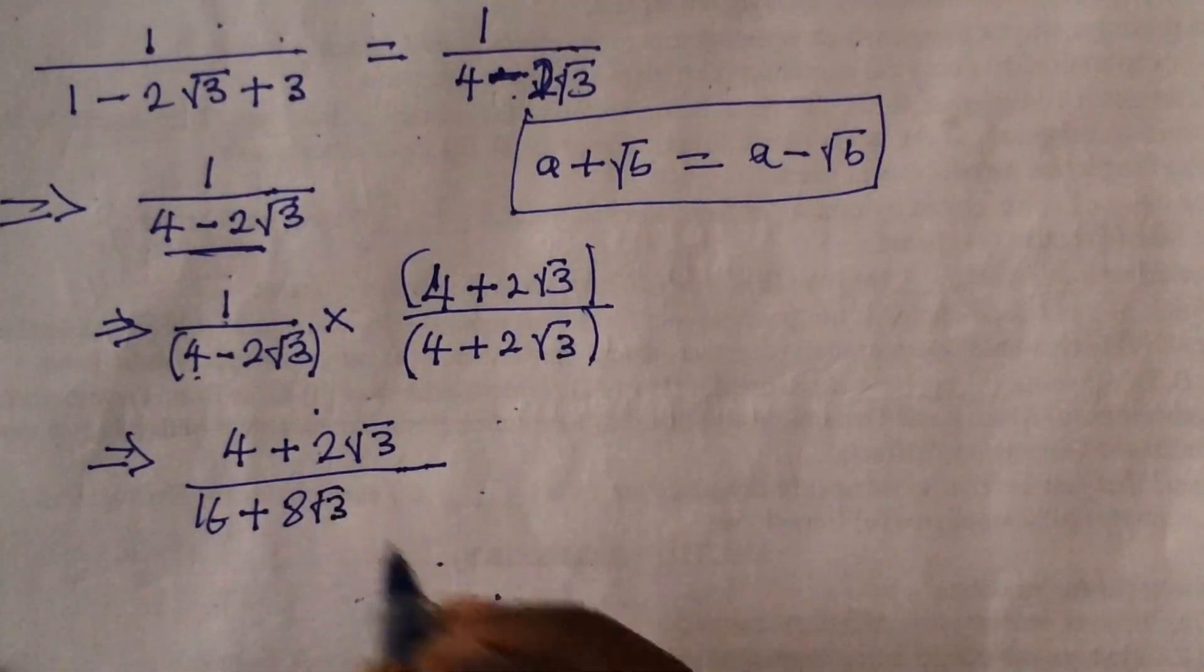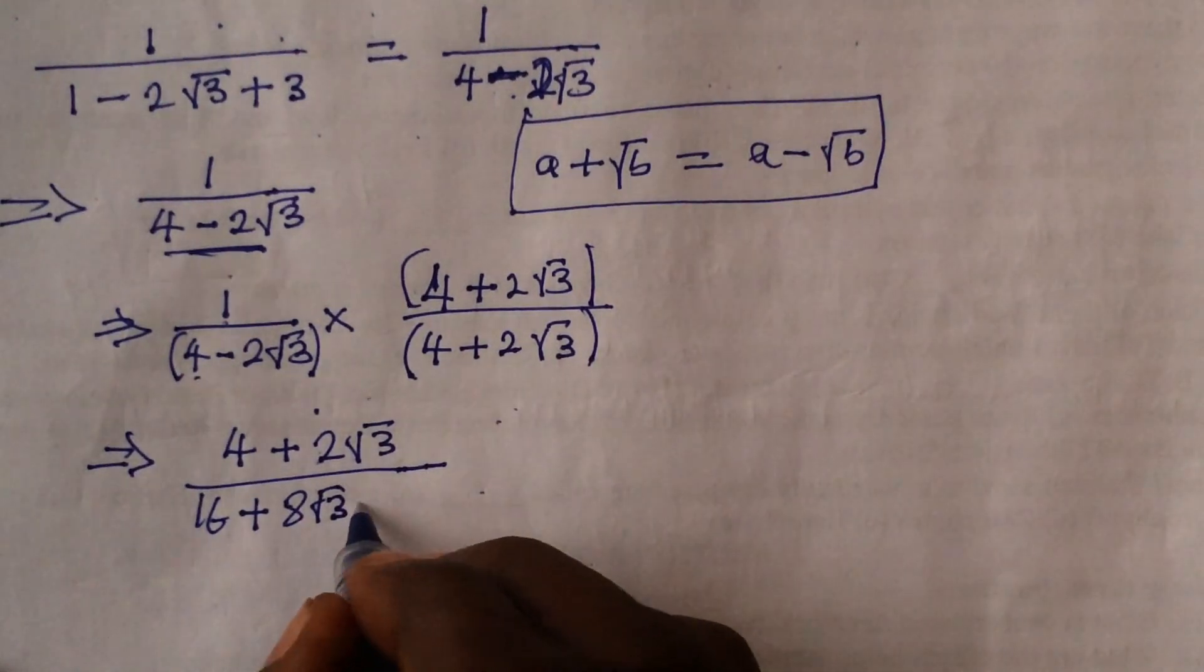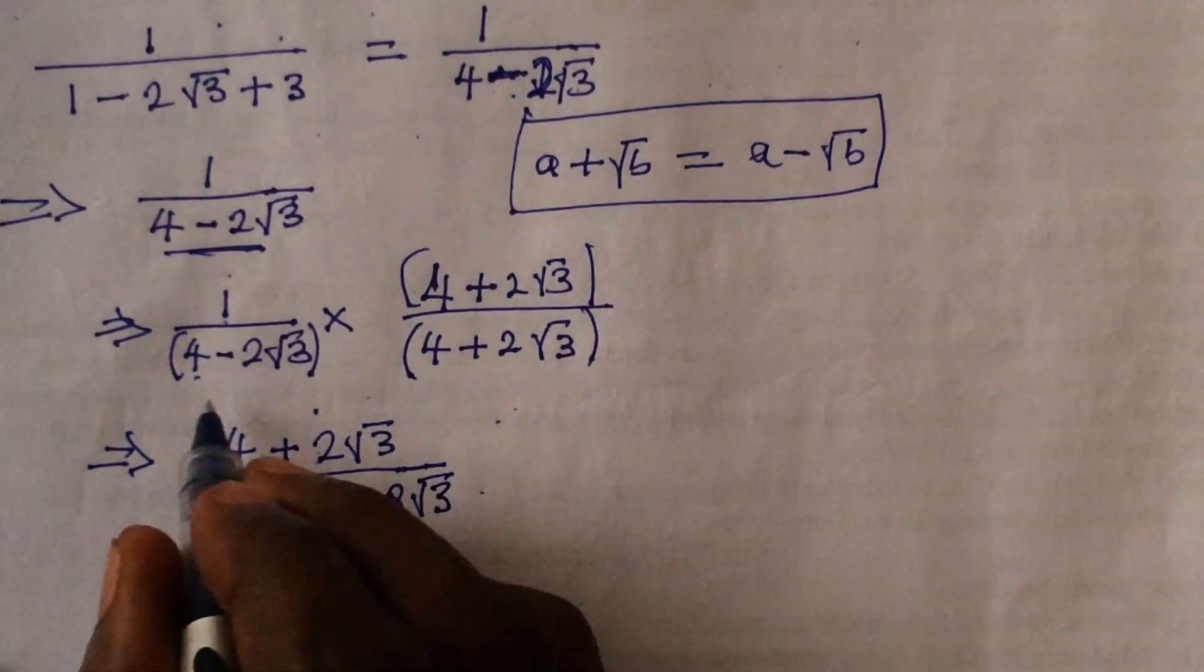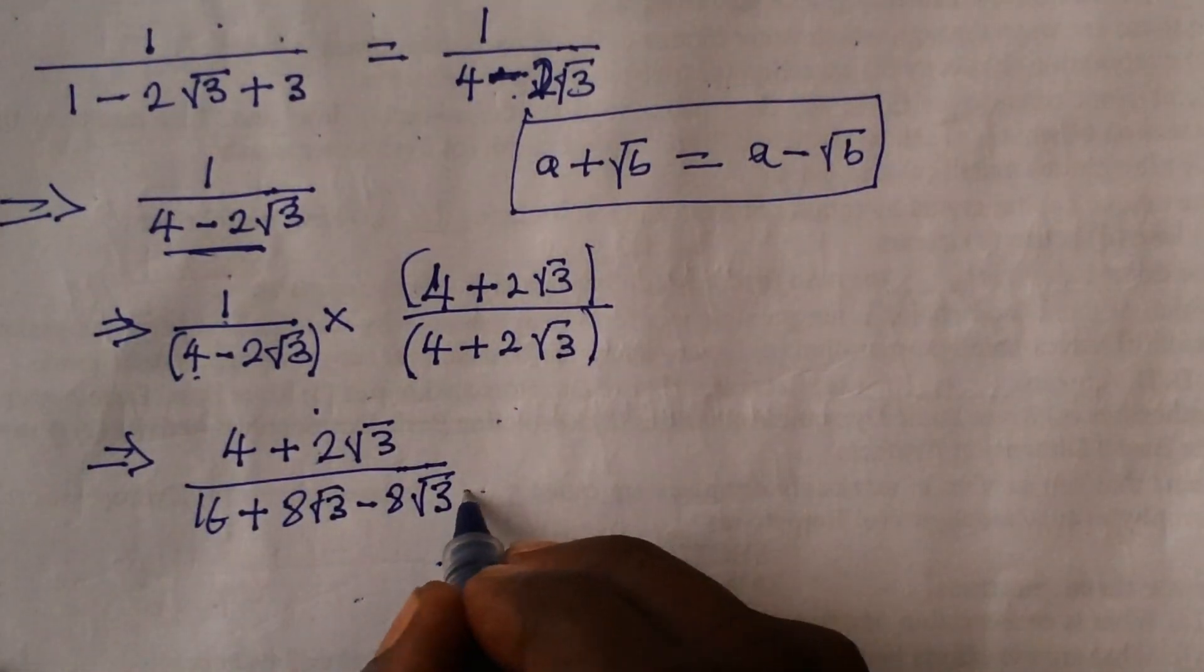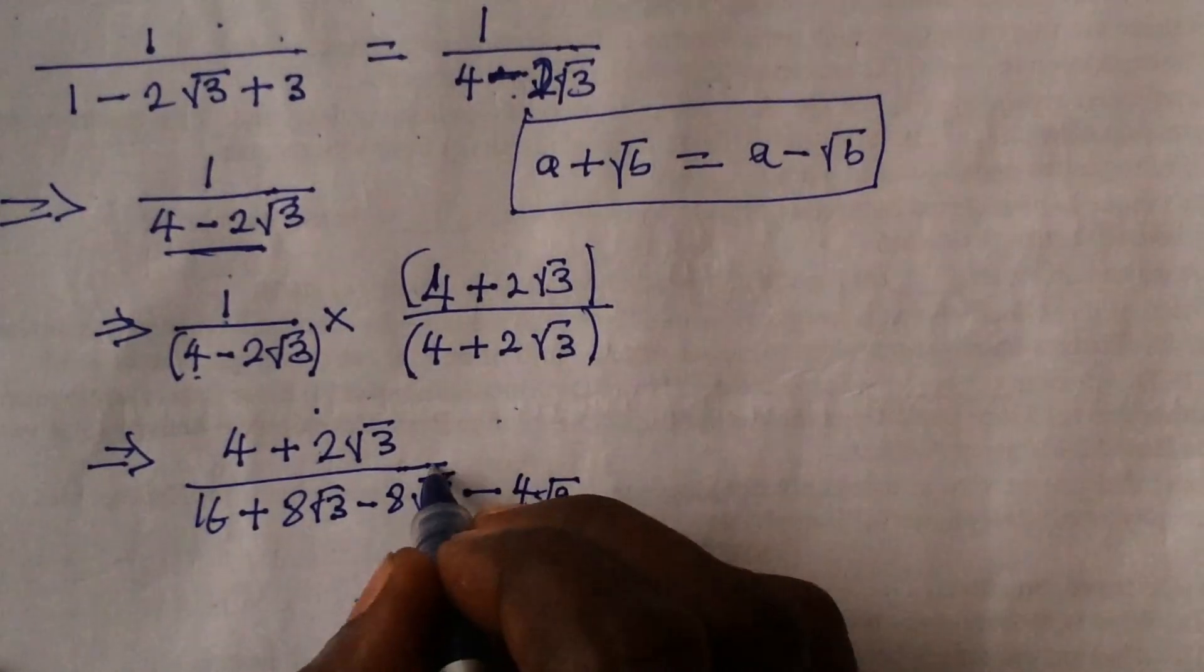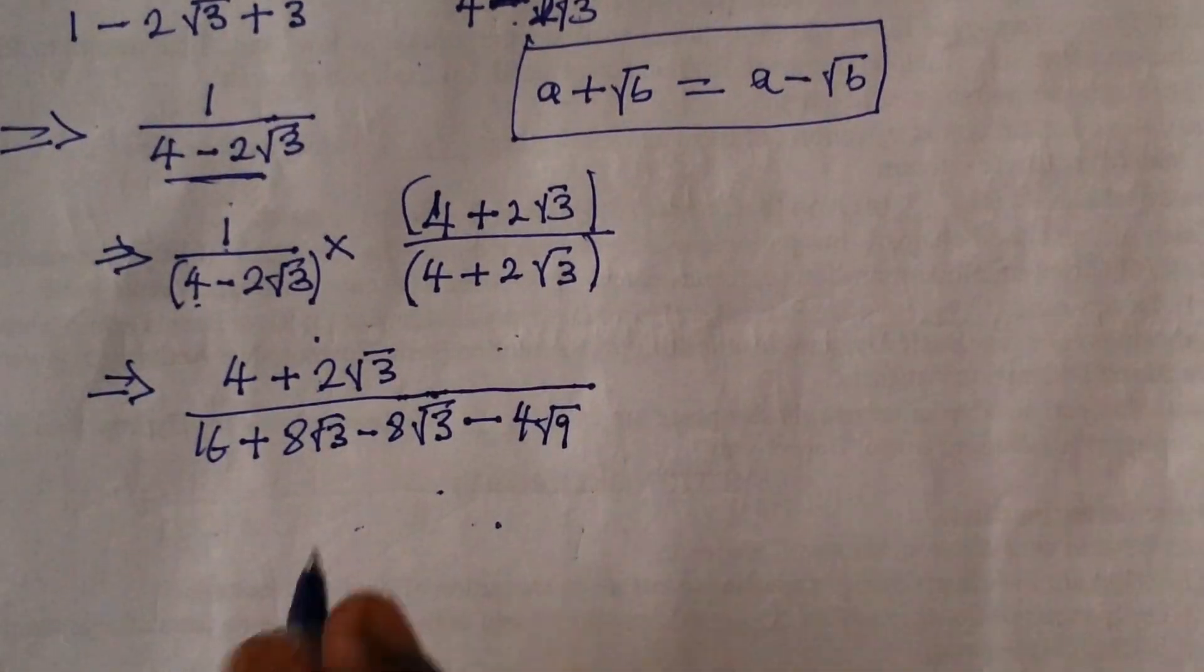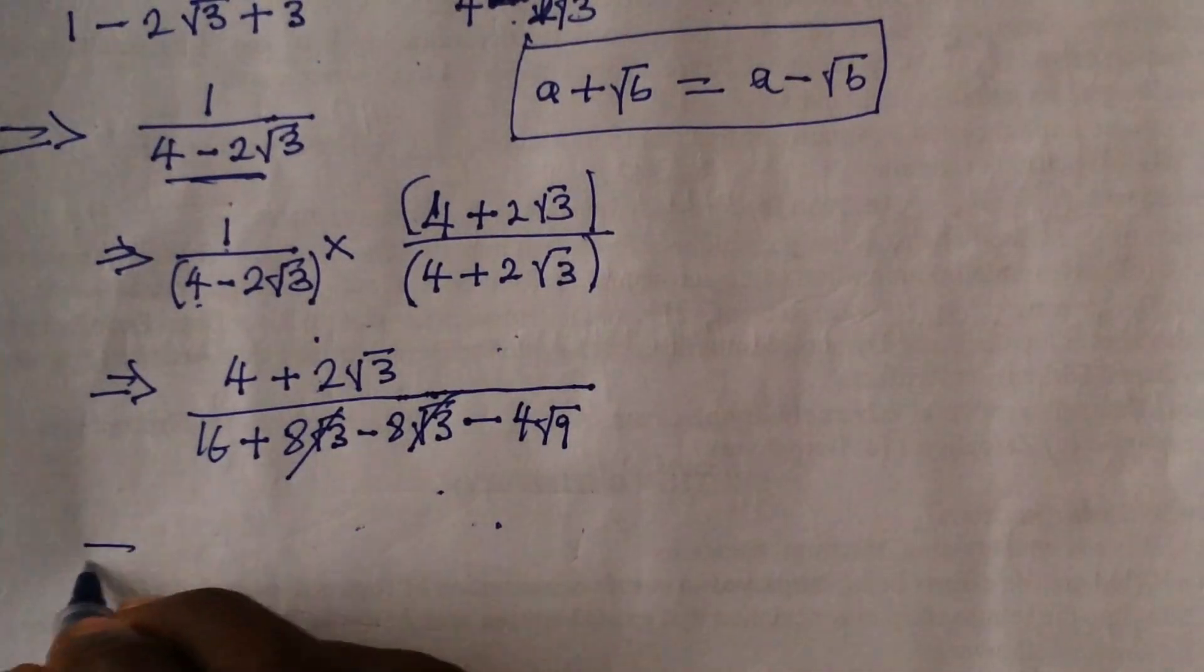Then 4 times 2 root 3 gives us plus 8 root 3. Minus 2 root 3 times 4 gives us minus 8 root 3. Minus 2 root 3 times plus 2 root 3 gives us minus 4 root 9.